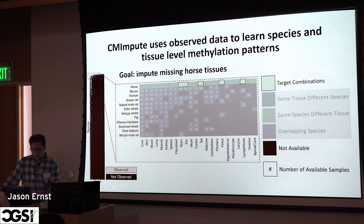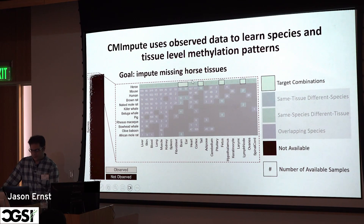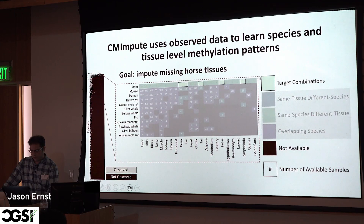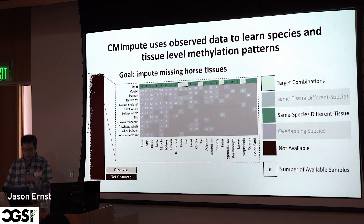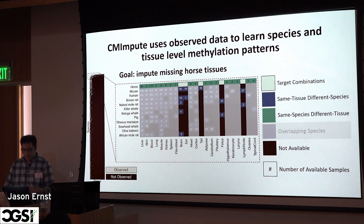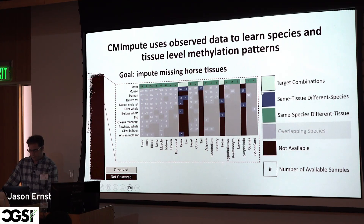Zooming into the grid, the numbers represent how many individual samples we had for each species-tissue combination. For example, for horse we had many samples in some tissue types, but no horse brain or horse ear. To make predictions for missing horse samples, we use the same species across different tissues, and the same tissue type across different species.